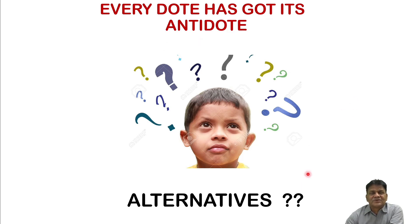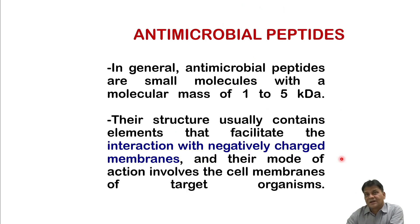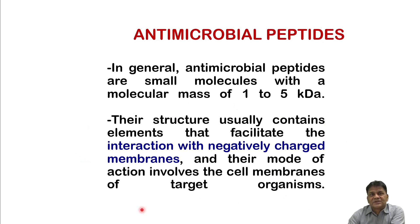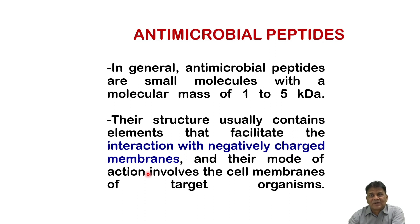Every problem has its solution, so let us think about alternatives. Antimicrobial peptides are one such alternative, and a lot of work is being done on them. They are found in our circulation and serum — small molecules with a molecular mass of one to five kilodaltons. Their structure facilitates interaction with negatively charged membranes, and their mode of action involves the cell membrane of the target. These are innate antibacterial agents present in our circulatory system.